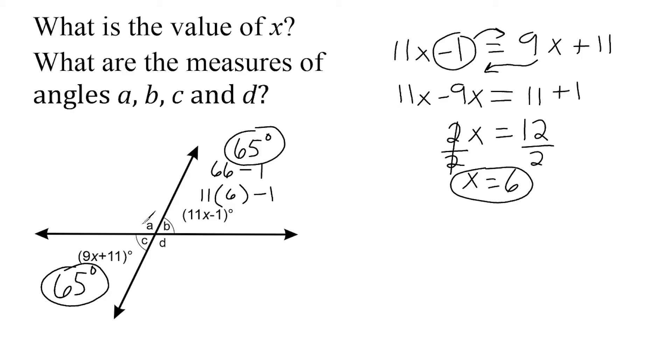Now another thing that we should understand about intersecting lines is that angles that are right next to each other are supplementary angles or have a sum of 180 degrees. So all we have to do is figure out what we would add to 65 to make 180 degrees. And that would be 115 degrees. I just did a little bit of mental math there.